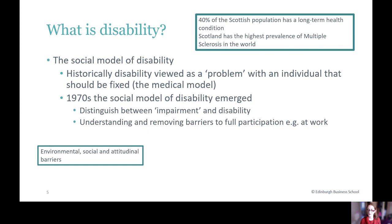In the 1970s, disabled people themselves led a political movement to eradicate the stigma around disability. This then led to what is now called the social model of disability — a disability-led theorisation and understanding of disability. Under the social model, we draw a distinction between impairment and disability.